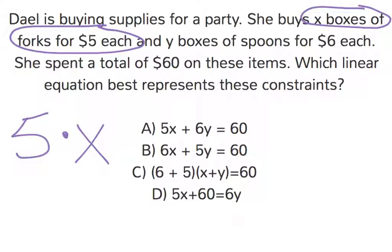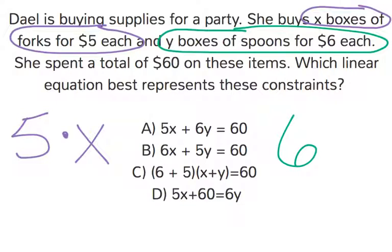boxes of spoons for $6 each. So we also need a 6 times Y because there are Y boxes of spoons and she buys them for $6 each.